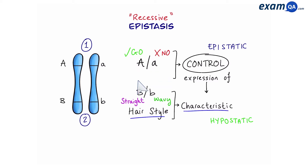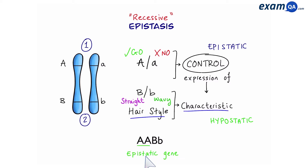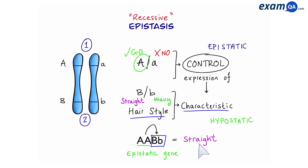So we can say that capital A is saying go to gene B — go and be expressed — while small a says no, you can't be expressed. Let's say we have an individual with the following genotype: two big A's, big B, small b. What would their phenotype be? To answer this, the first thing we'll do is look at the epistatic gene. In this case we have two big A's, so that means it's a go-ahead from the epistatic gene. Now we can look at the hypostatic gene, and overall it's dominant. That means the person will have straight hair.